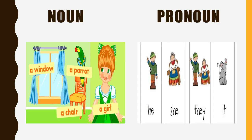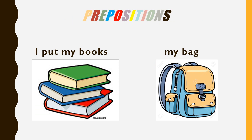Tell me, what is a noun? Good — a noun is the name of a person, place, or thing. And what is a pronoun? Yes, it is a word that is used in place of a noun, like he, she, it, they, etc.